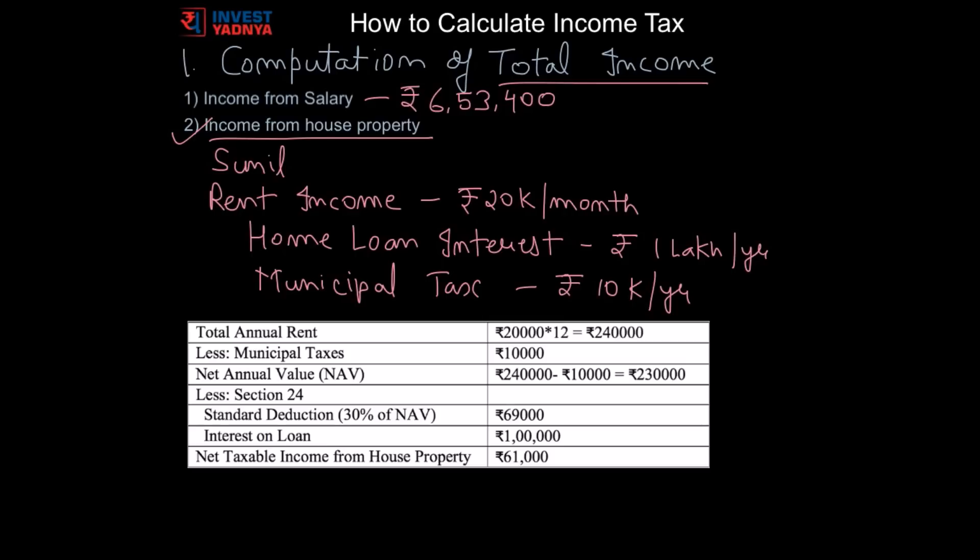Total annual rent will be monthly rent multiplied by 12 months. Then we can deduct municipal tax paid from this income that is rupees 10,000. So net annual rent value is this much. Now there are two deductions available under section 24. First is standard deduction. Standard deduction is 30% of the net annual rent value calculated above. This deduction is irrespective of the actual expenditure you may have incurred on insurance, repairs, electricity, water supply etc. So in this example standard deduction is 30% of this amount which is Rs 69,000.